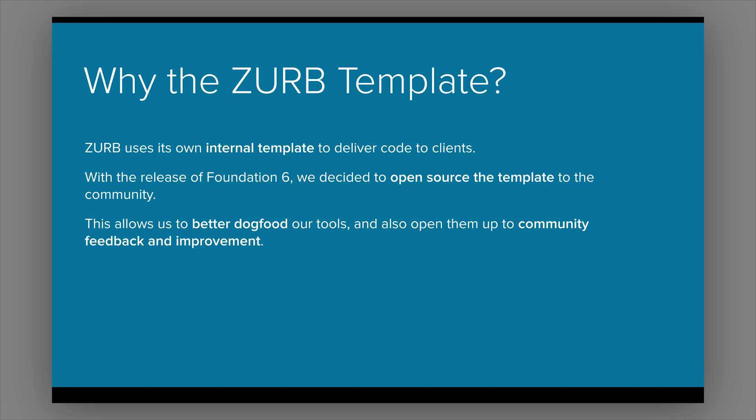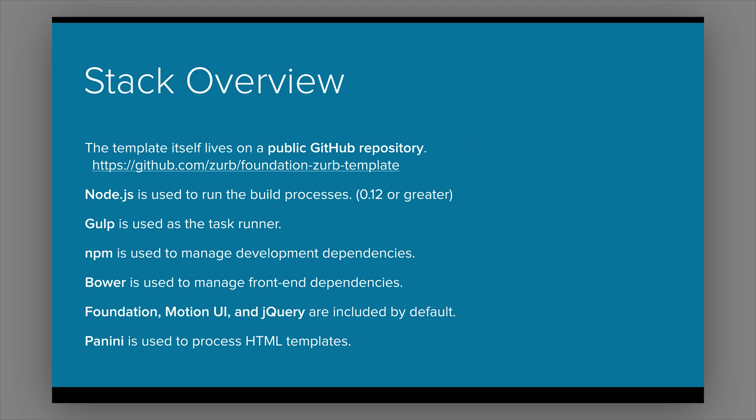The quick overview is that the ZURB Stack is something we've been using at ZURB for quite a while. In Foundation 6 we decided to build it on gulp instead of Grunt and then open source it so everybody in the community can use it. It's a really powerful set of tools. In the stack it's built on Node using gulp as a task runner, npm as the package manager, and we're also using Bower as a front-end package manager for things like jQuery, Motion UI, and Foundation. Panini is what's processing the Handlebars templates.